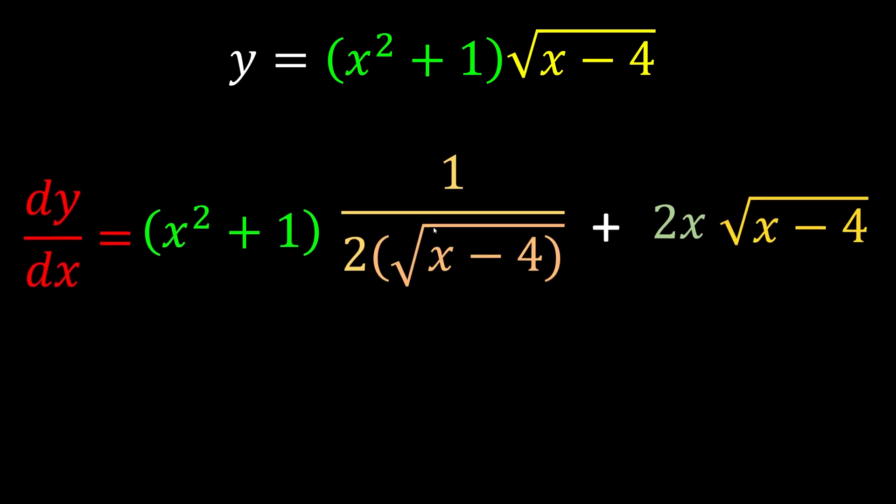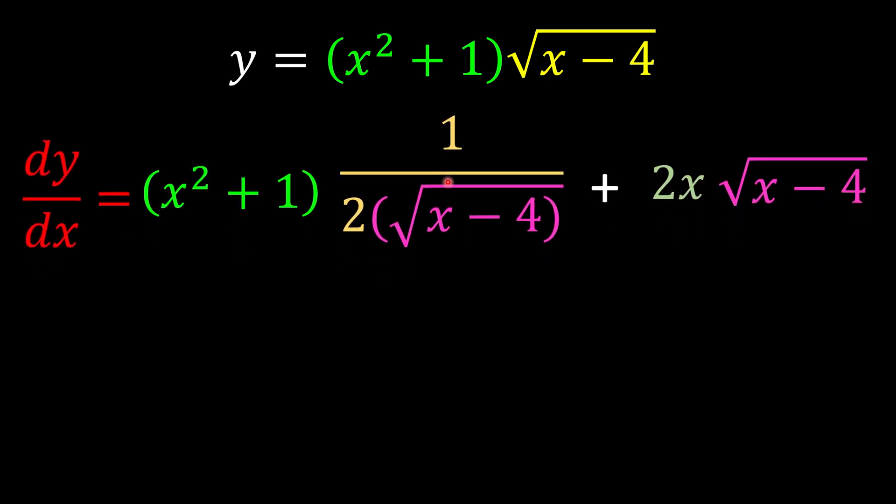So how can we simplify? We can treat this as u, this is v, and this is v, right? Imagine now you have u times 1/(2v) + 2x times v.